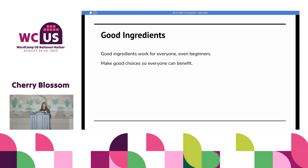Good ingredients work for everyone. Using basic fonts, improved colors, and simple images — by using these elements and making these good choices, we can have our designers build great designs that work for everyone, and our developers can easily implement them for accessibility.